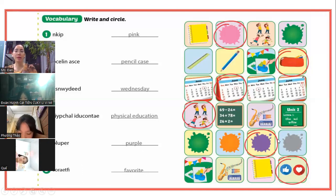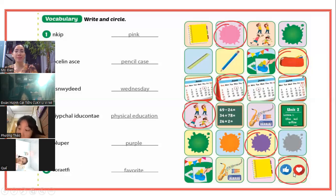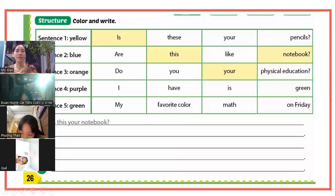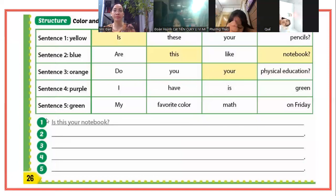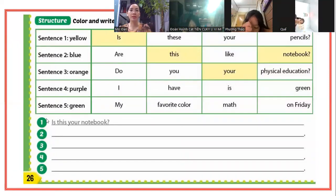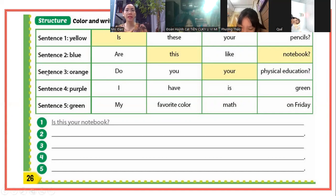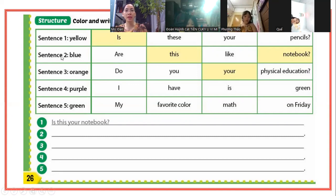Purple - màu tím, các bạn khoanh màu tím. Favorite là yêu thích nhất. Chúng ta qua phần color and write. Hãy tô màu và viết. Câu số 1: Yellow - các bạn lấy màu vàng, các bạn tô vào. "Is this your notebook?" Và các bạn viết ra đây. Câu số 2: Blue - màu xanh dương, các bạn lấy màu xanh dương, tô vào. Mẫu câu: "Are these your pencils?"